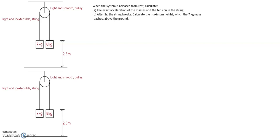In this mechanics video, we have a pulley system connected to a fixed horizontal beam. The pulley itself is said to be light and smooth. Light means its mass can be neglected in respect of the 7 and 8 kilogram masses. Smooth meaning there will be no friction between the pulley and the string.